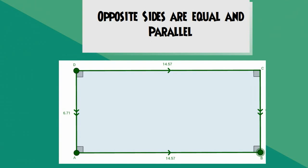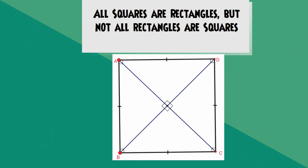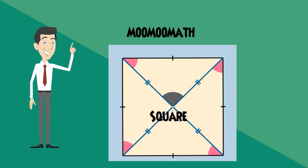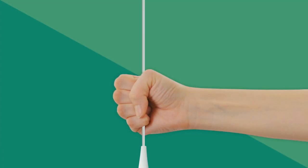All squares are rectangles, but not all rectangles are squares. In this video I would like to talk about the properties of a square. A square is a plane shape. It is a quadrilateral that is two-dimensional, so it has length and width but no height. A square has four congruent, equal sides.